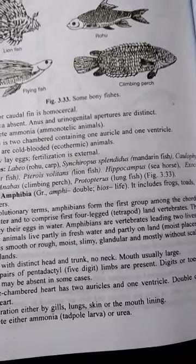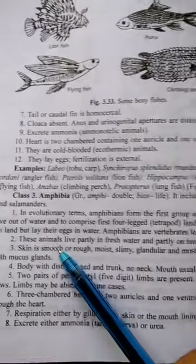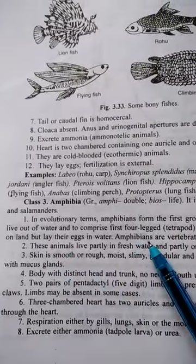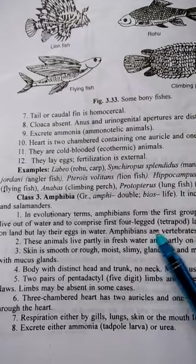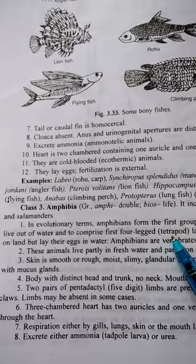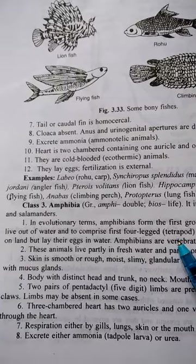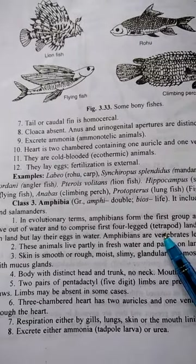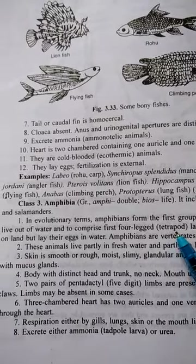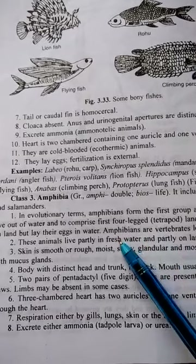In evolutionary terms, Amphibia is the largest group among the chordates to live out of water and to comprise four-legged animals. They are four-legged but they are the largest group which live in water as well as on land.